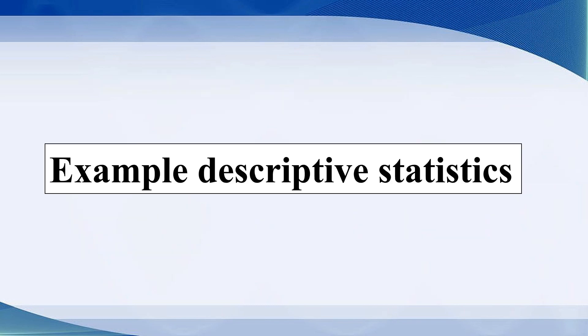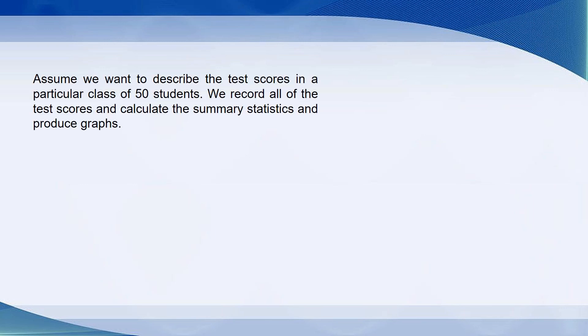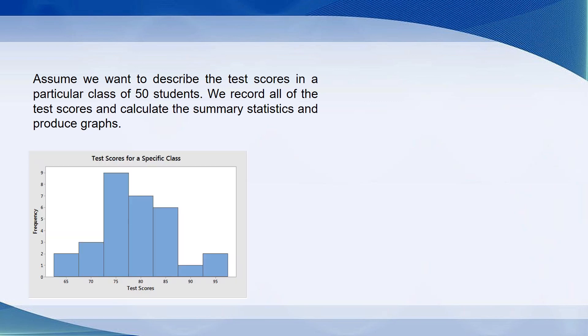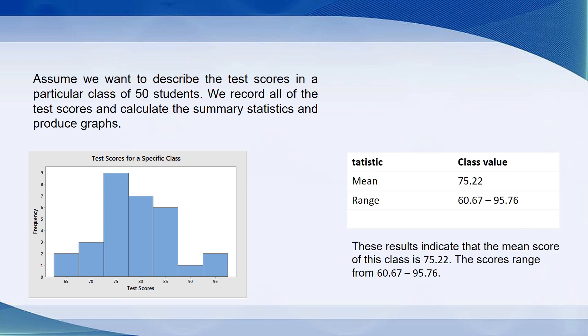Example of descriptive statistics: Assume we want to describe the test scores in a particular class of 50 students. We record all of the test scores and calculate the summary statistics and produce graphs. These results indicate that the mean score of this class is 75.22. The scores range from 60.67 to 95.76.